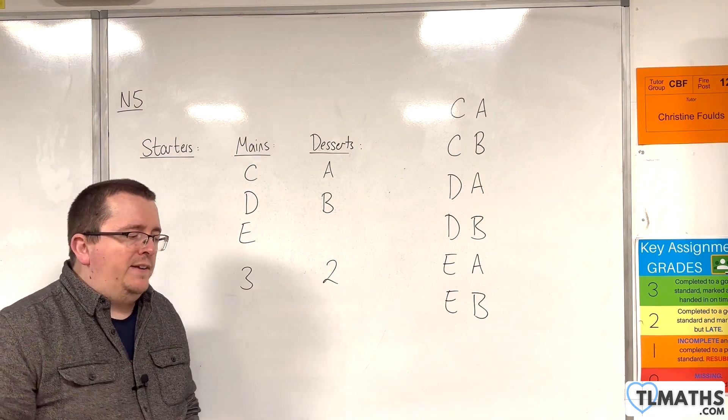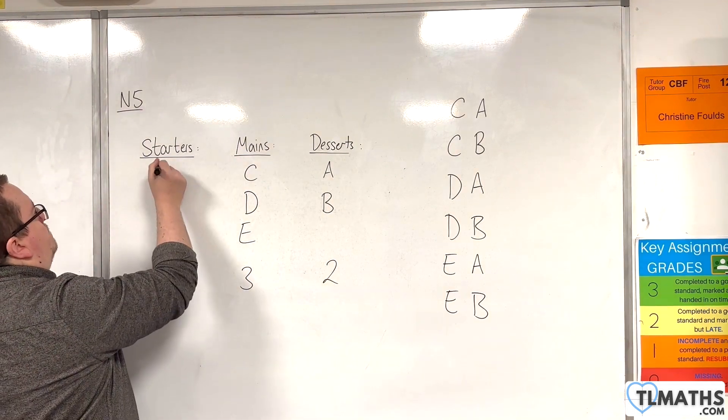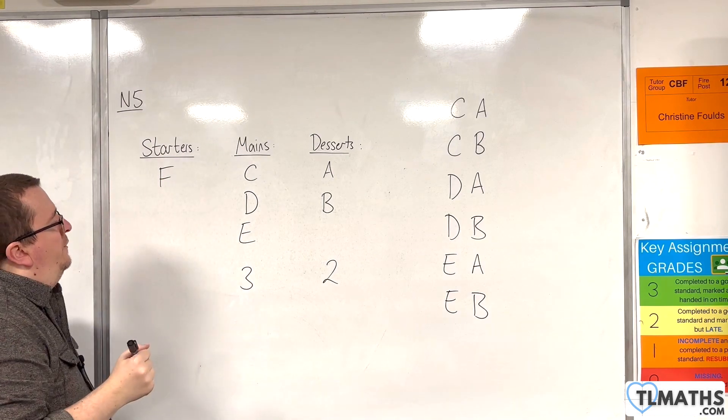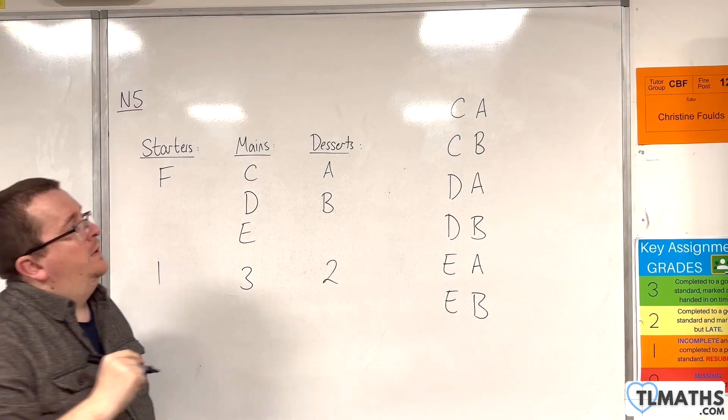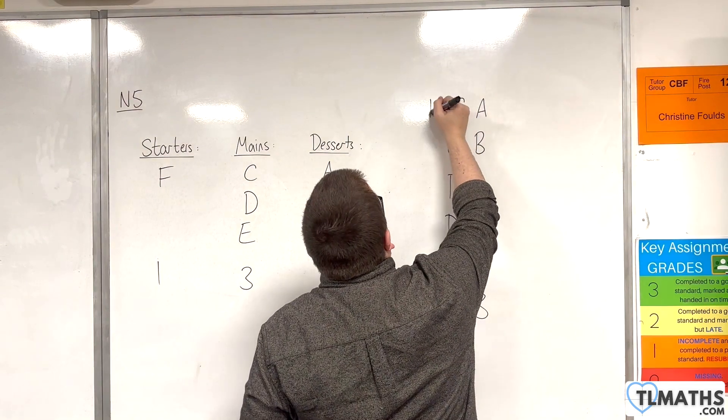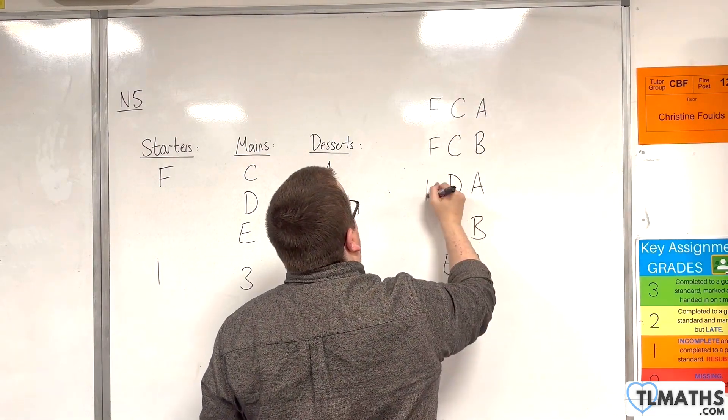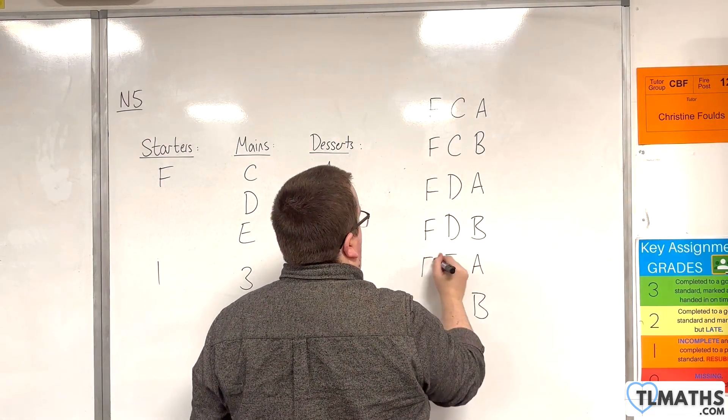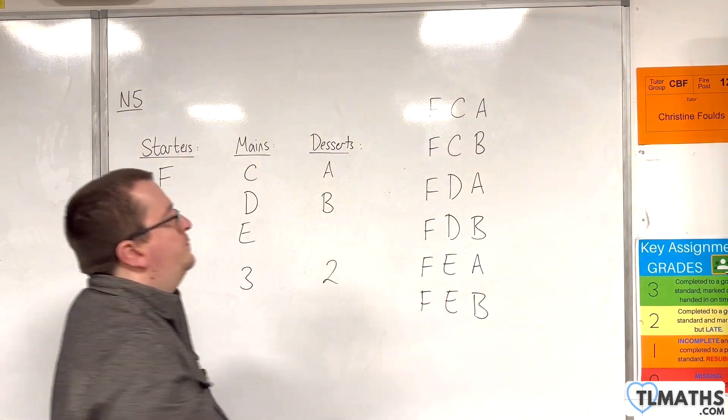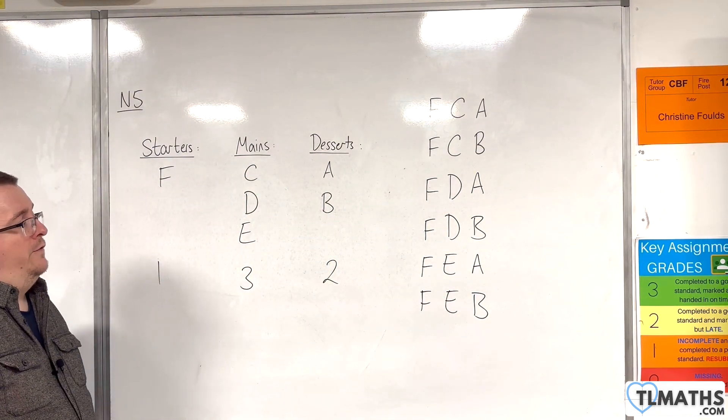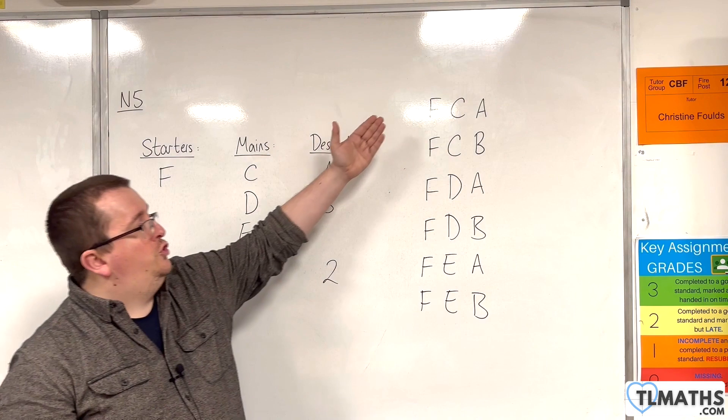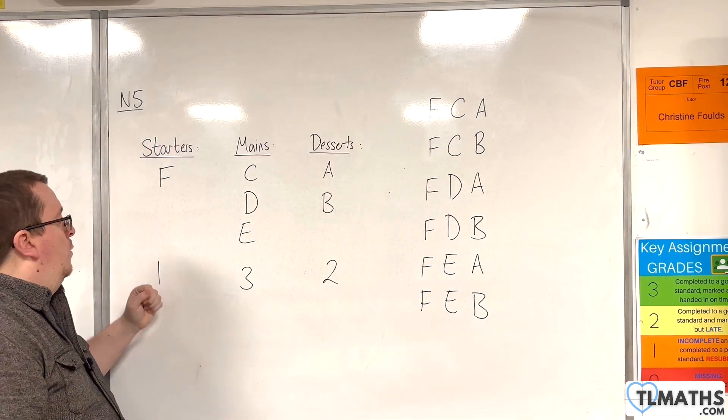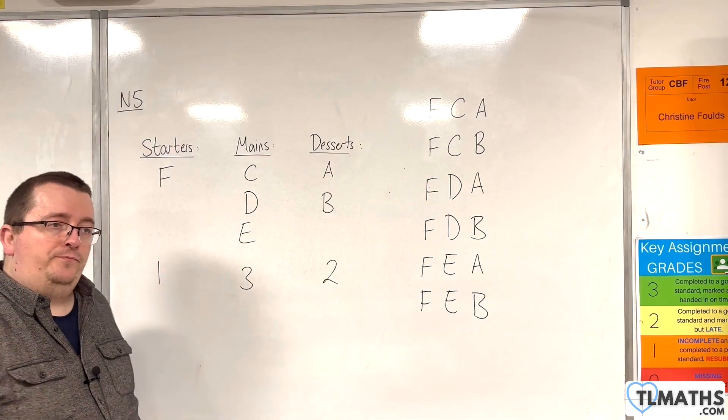Let's now add in a starter. Let's call it F. There is now one starter. So, F would have to come before the main, wouldn't it? So, F, F, F, F, F, F. And, of course, we would still just have six options here. One times three times two.